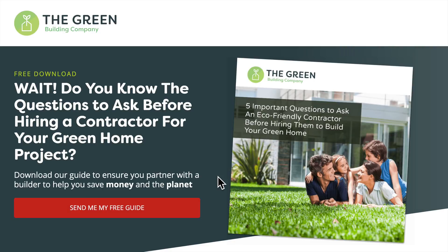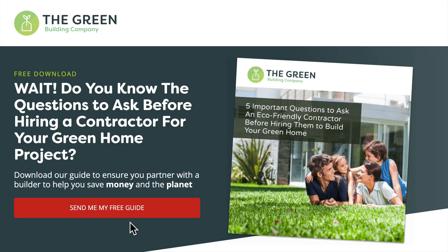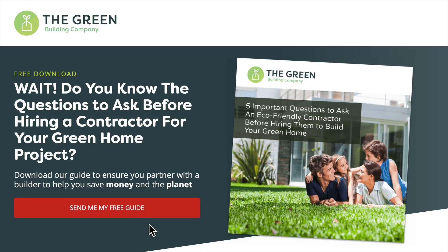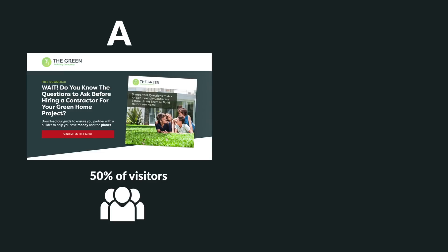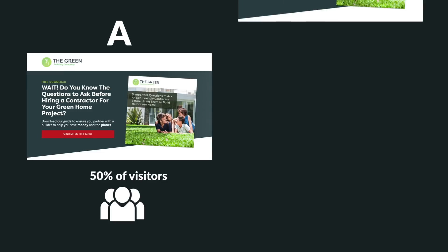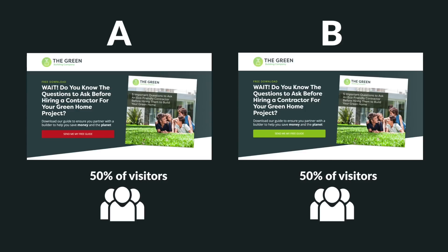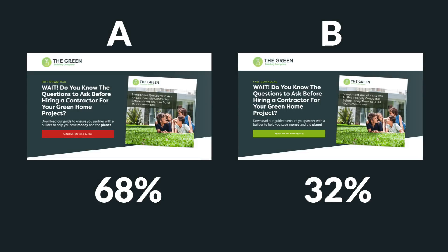The basic idea is you change one element at a time on the page to see if it improves conversions. I might decide to change the colour of this button to green — to see if more people opt in with a green call-to-action button than a red one. So we'd create two variations: one red, one green. Our split-testing tool will show version A with the red button to 50% of visitors and version B with the green button to the other 50%. After enough traffic has seen the page, we'd see which version had the higher conversion rate. The version with the highest conversion rate is the winner and becomes the live version for all visitors from then on.